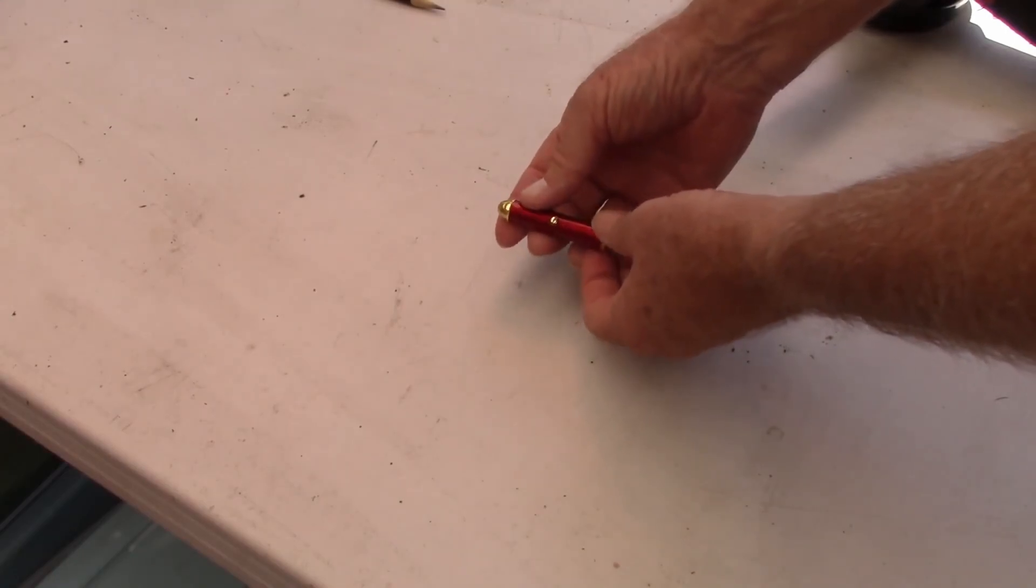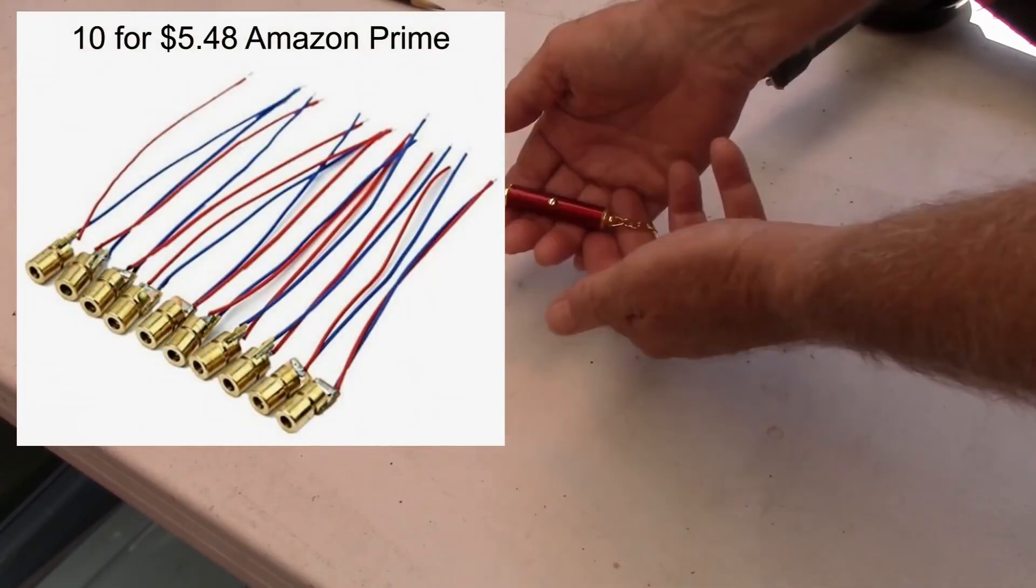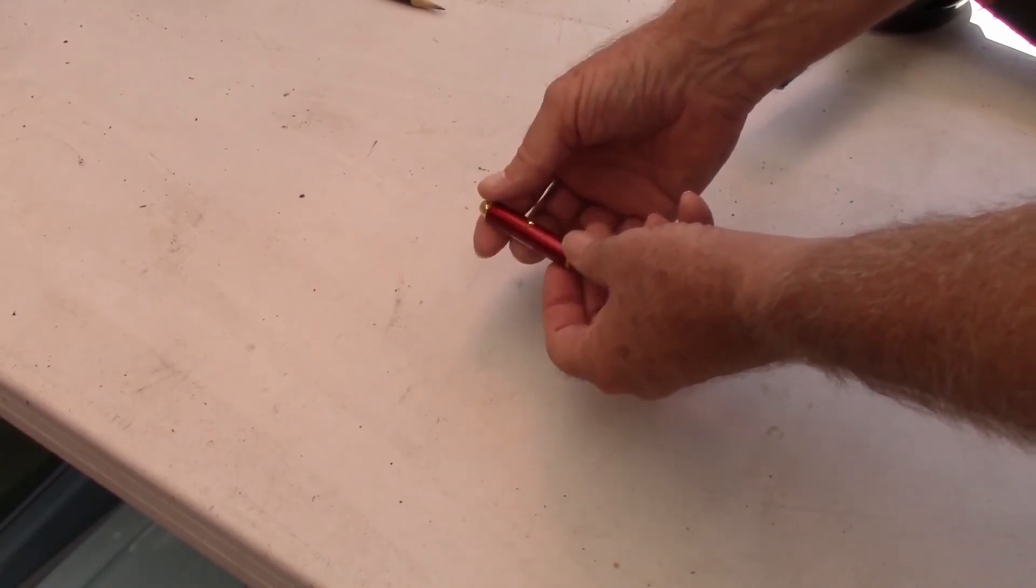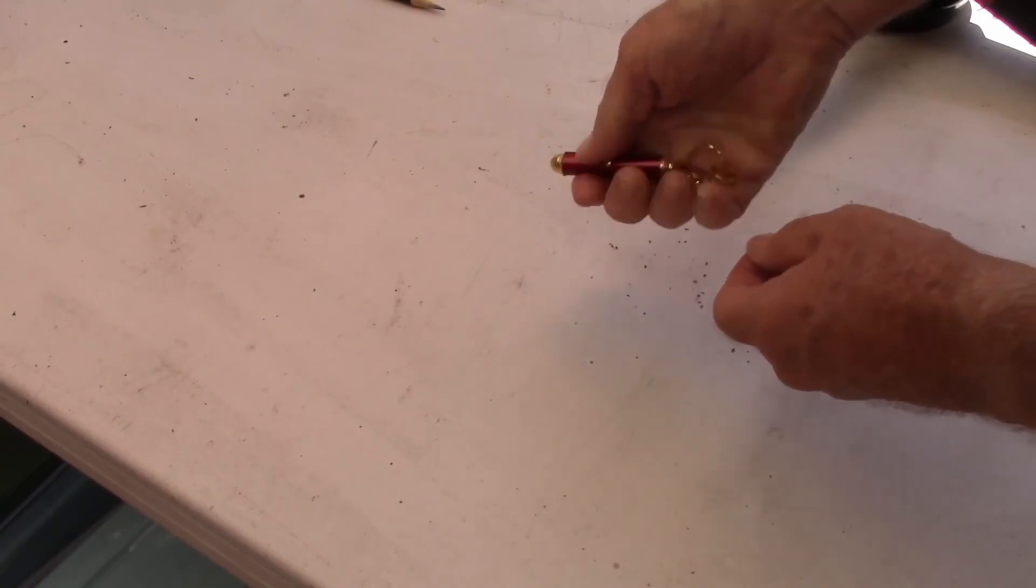Now, you can get laser modules pretty cheaply off of Amazon, but I have this in my hand right now. Only paid a dollar for it, and it only took me a few moments to crack it open. Now, KIP-K simply, make sure this thing works, there we go, we do have laser.